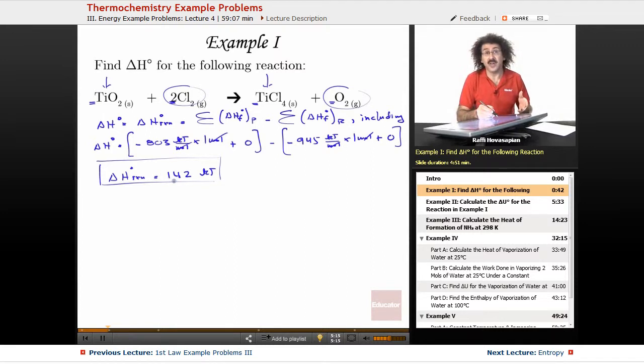So this is positive enthalpy, which means this is an endothermic reaction. In other words, in order for this reaction to go forward, it actually has to pull 142 kilojoules of heat from the surroundings. It has to go into the system. That's it.